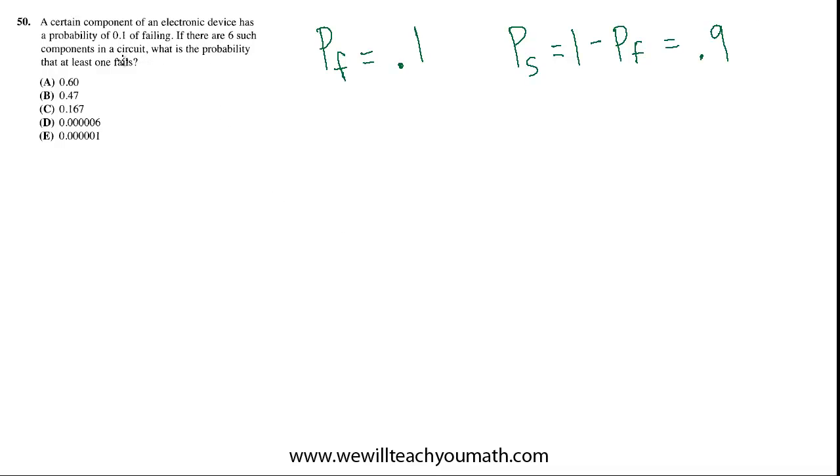There are 6 such components in the circuit. What's the probability that at least 1 fails? And these words are so important. At least 1 fails. So, how many ways could that happen? That could mean that 1 fails, that 2 fail, that 3 fail, 4, 5, or all 6.